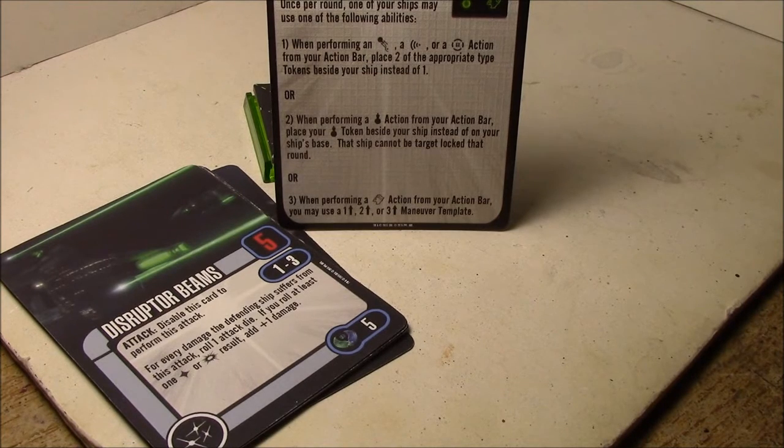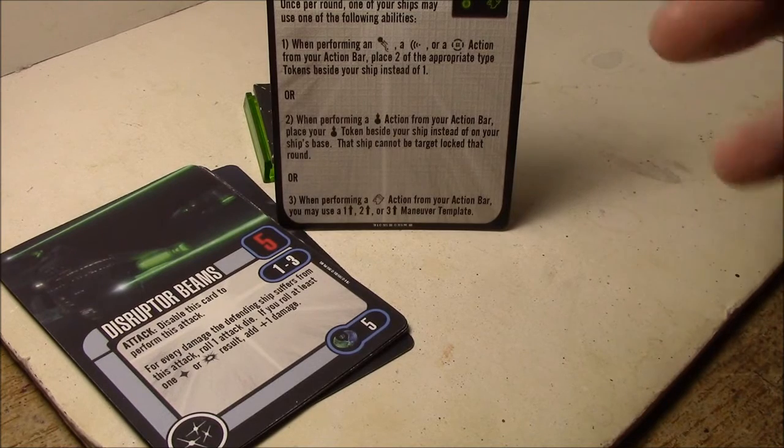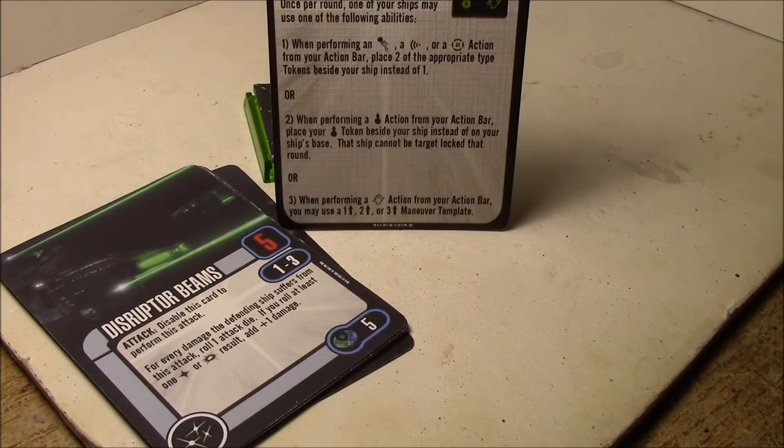So even if you get late in the game, you can't, you have to spend the tokens to, you have to spend your action to do the double evade. And you still usually get in range one for that four attack dice instead of spending the action to re-enable the disruptor beams.